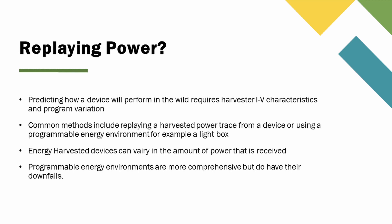Predicting how a device will perform in the wild requires harvester IV characteristics and program variation. Some common methods include replaying a harvested power trace from a device or using a programmable energy environment, for example a lightbox. Note that energy-harvested devices can vary in the amount of power that they receive, and while programmable energy environments are much more comprehensive compared to a simple power trace, they do have their downfalls.